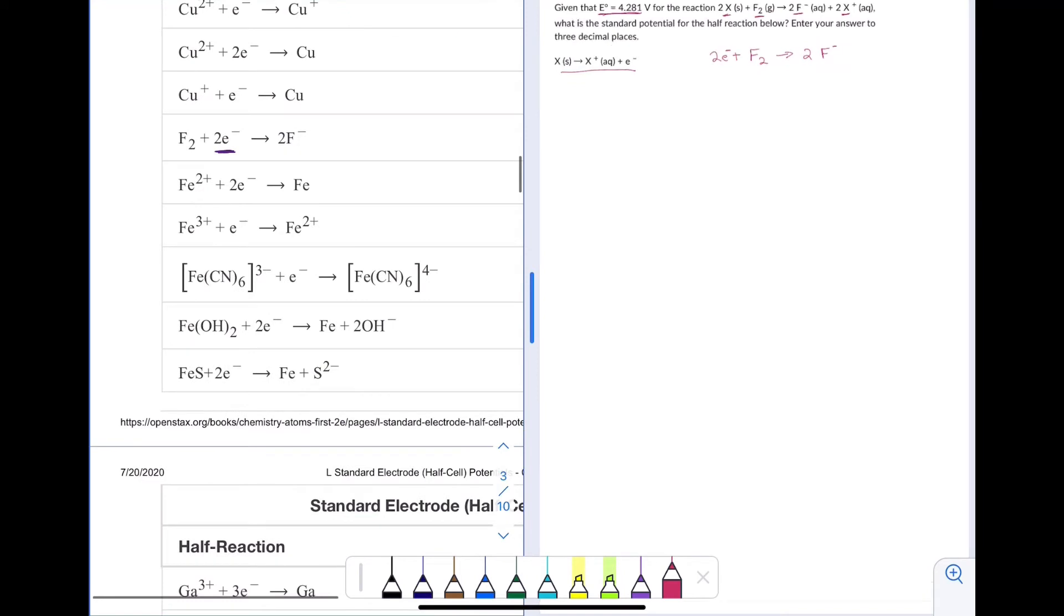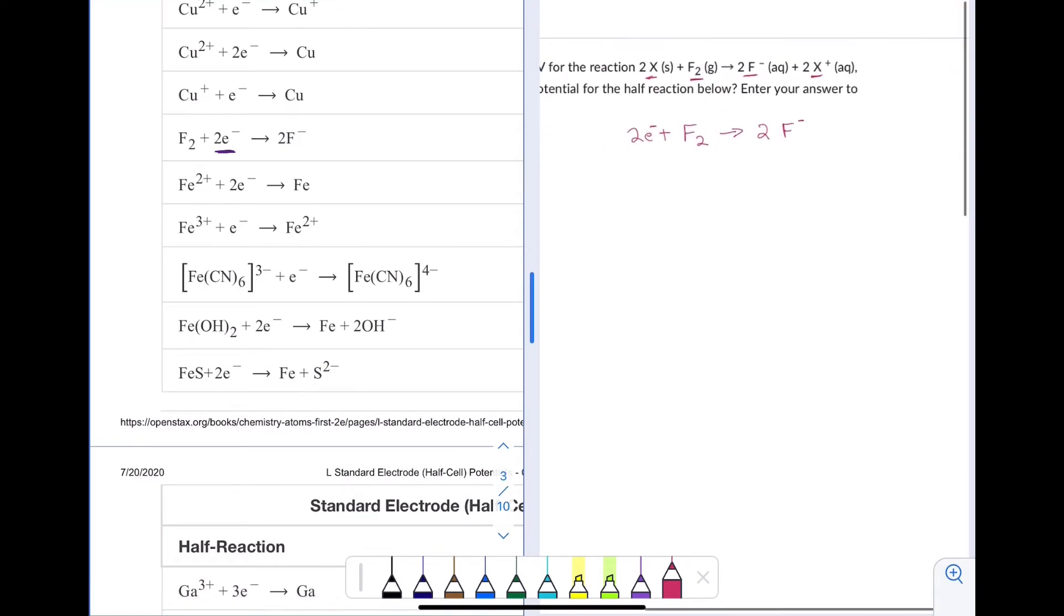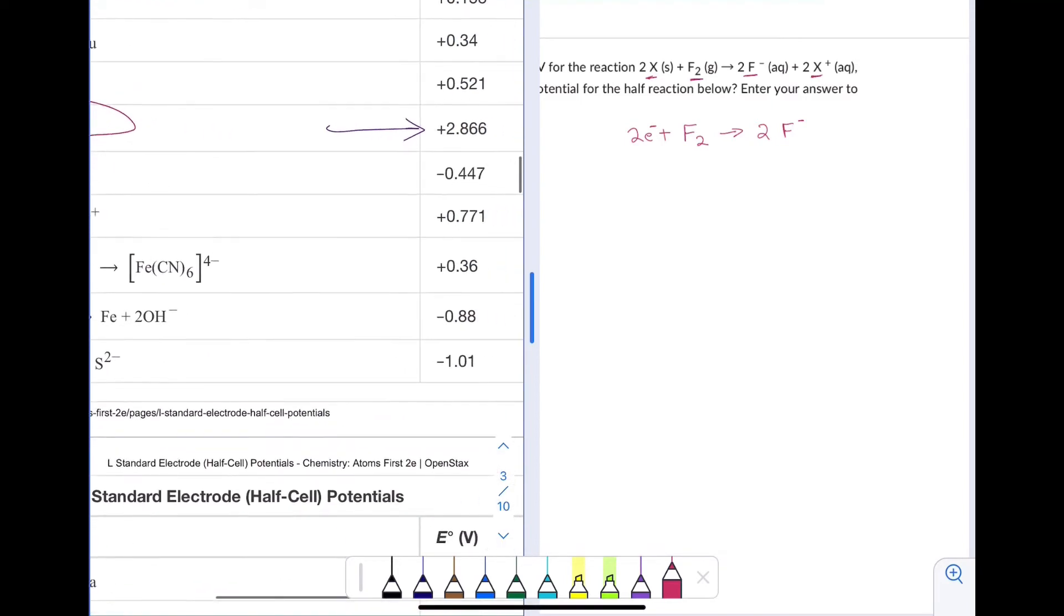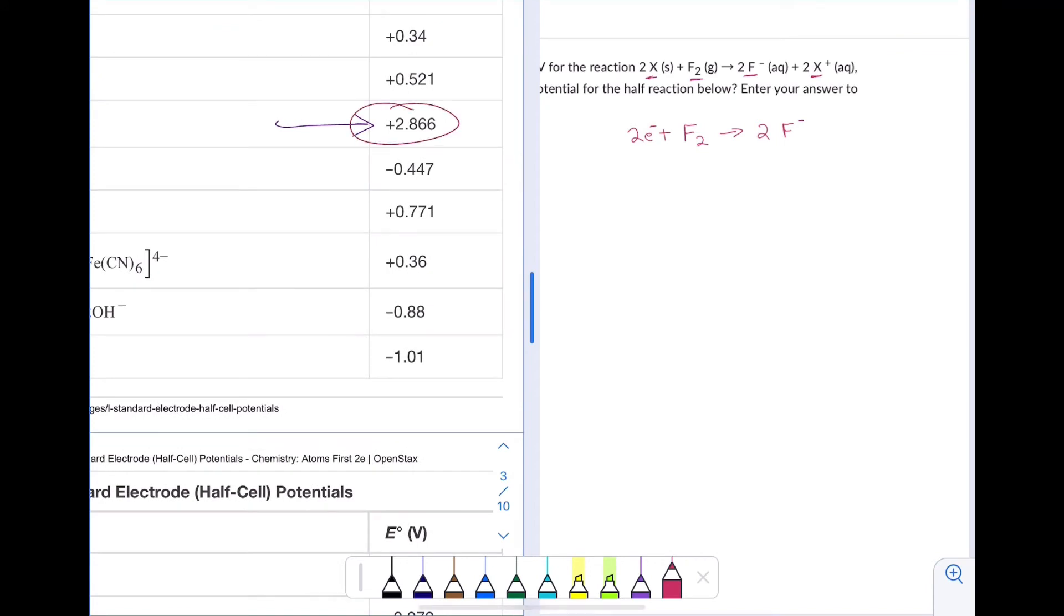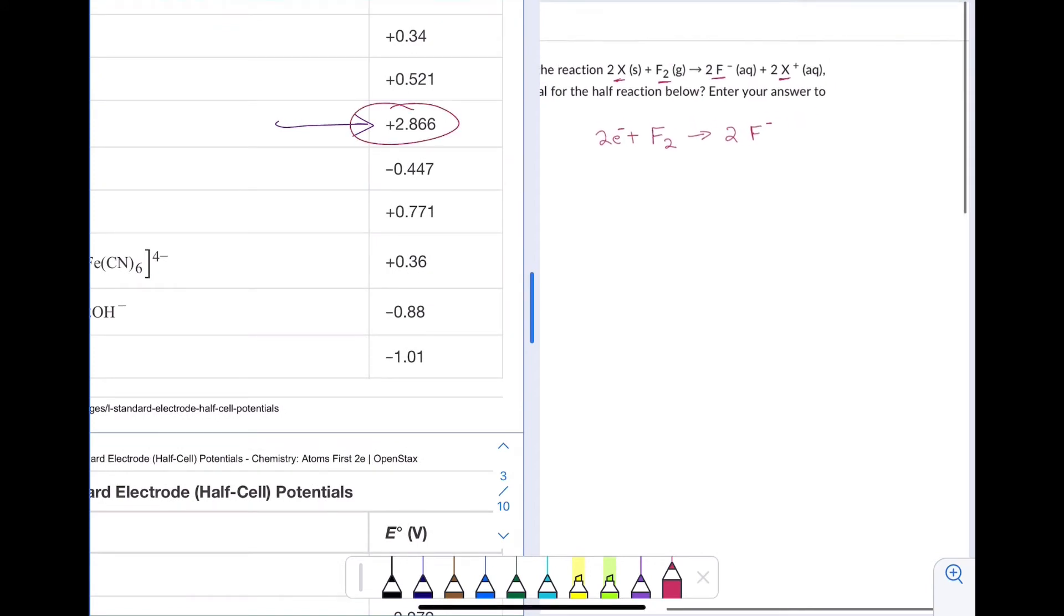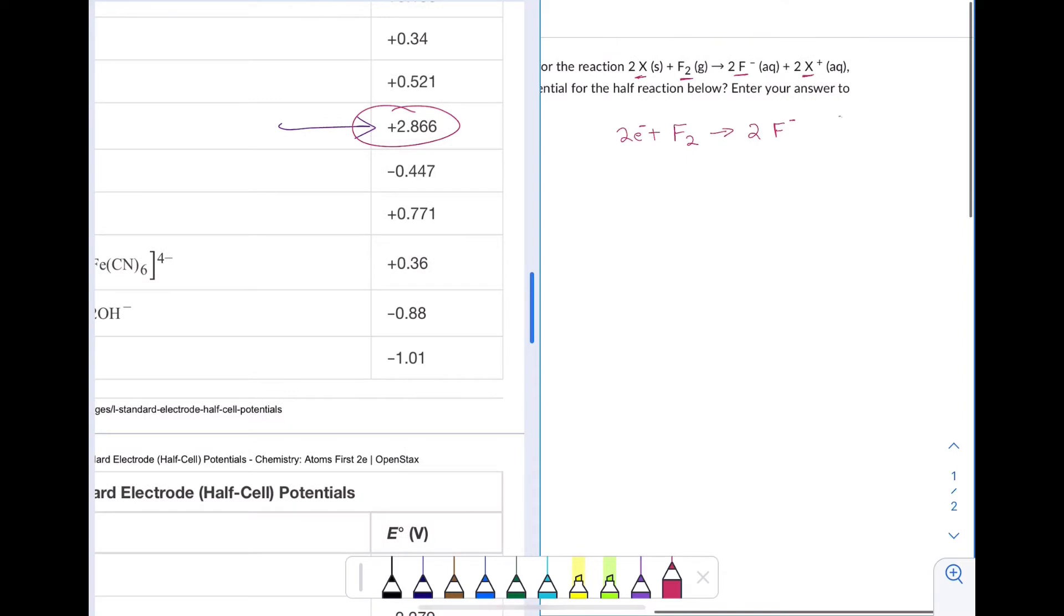So coming down here to fluorine, that fluorine half reaction is F2 plus two electrons goes to 2F minus. The potential for that half reaction, the standard reduction potential, because this is the reduction half reaction, is positive 2.866 volts.